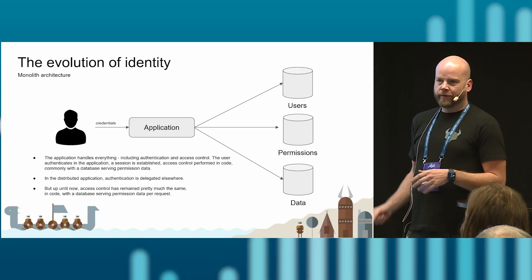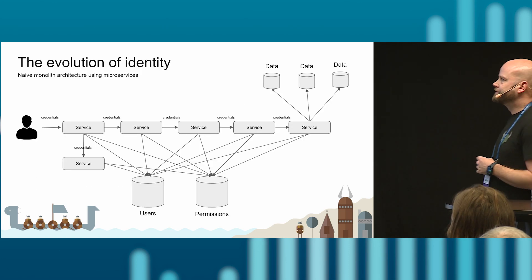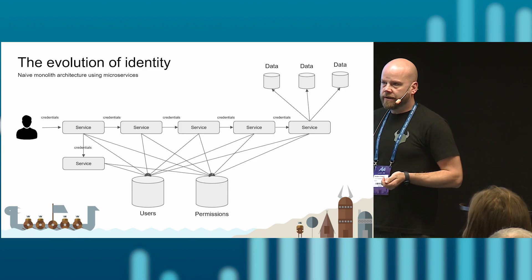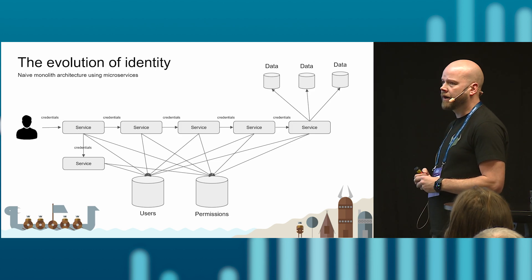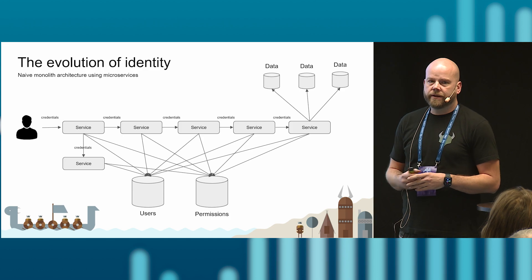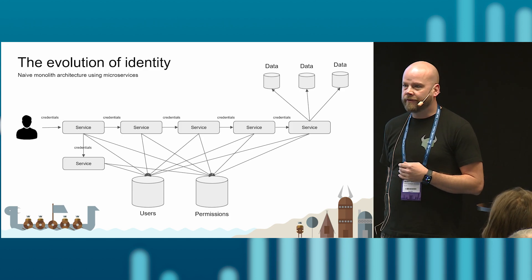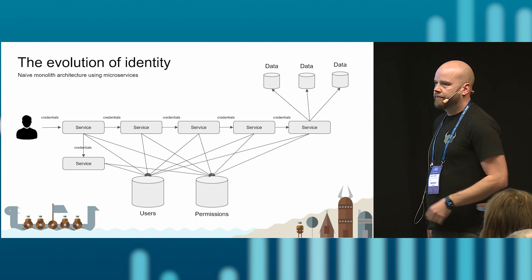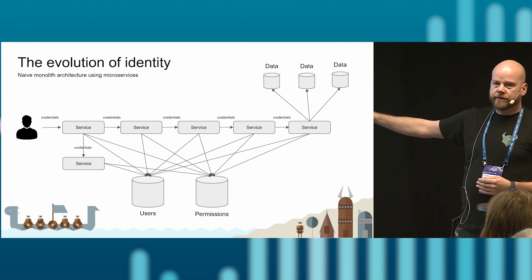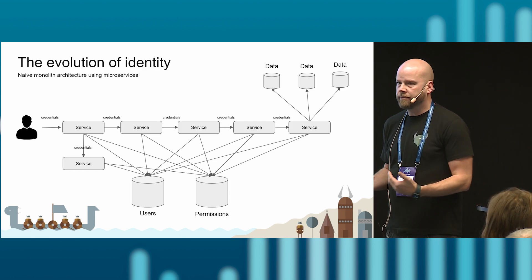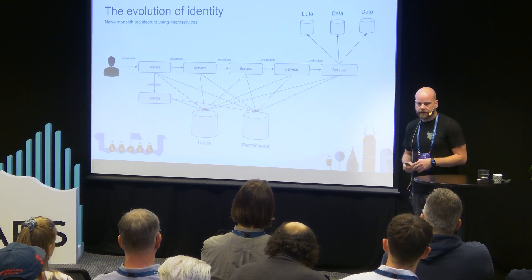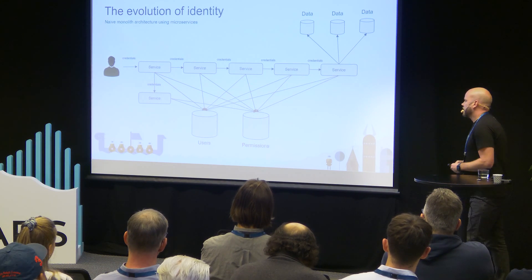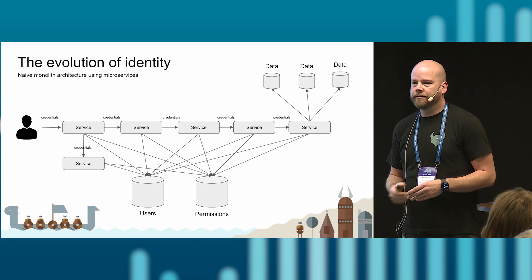How would we scale this up if we have hundreds or thousands of services? The naive model, if we were to translate the monolith into a distributed environment, would look something like this. We still have a user providing credentials, credentials are passed around between services, all services have to look up the identity of the user and verify whether the action should be allowed before eventually getting down to the data and returning something to the user.